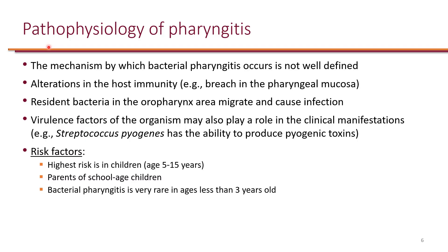When it comes to pharyngitis, the mechanism is not well understood. It's proposed that alterations to the host's immunity allow organisms to grow in the pharynx. Although pharyngitis mostly occurs in children aged 5 to 15, it can also occur in adults, especially in parents of school-age children because pharyngitis is contagious.